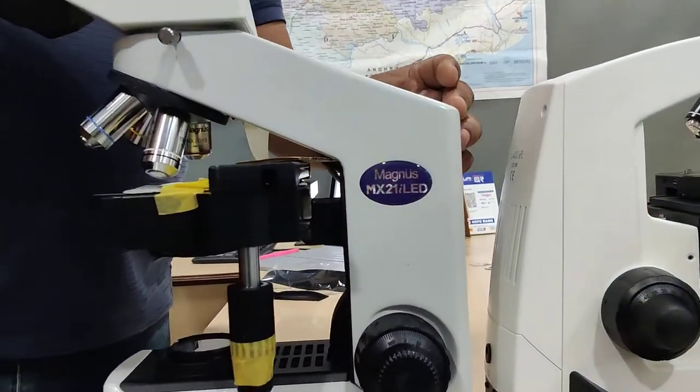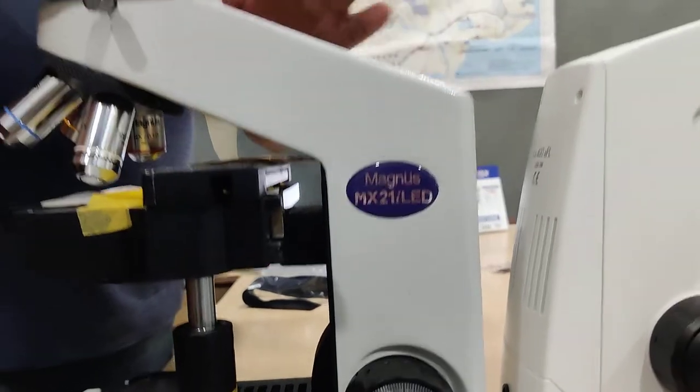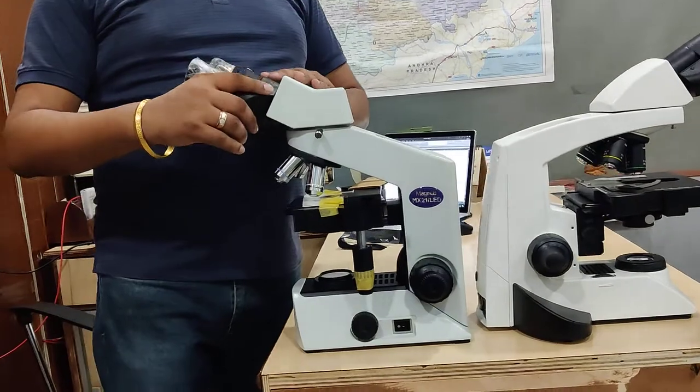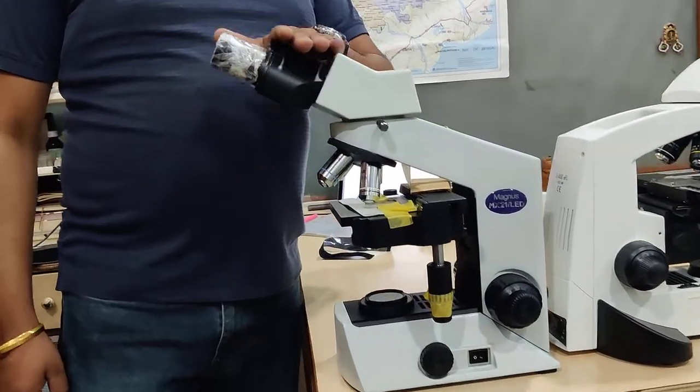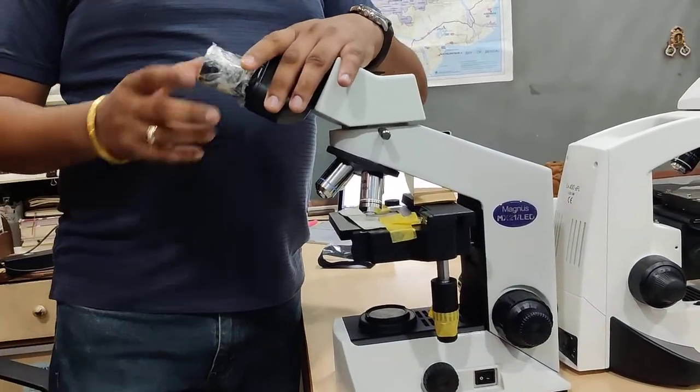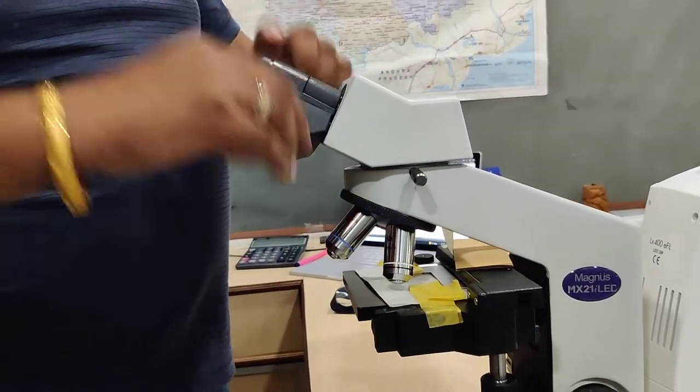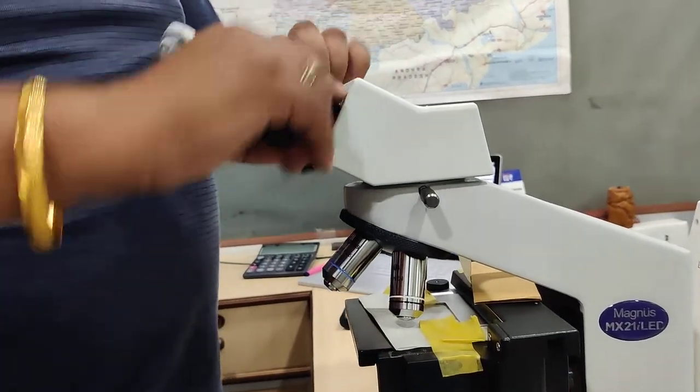Now we are demonstrating the features of the MX-21i. The first feature is that it has a 30 degree inclination. With this 30 degree inclination, it has silent movement. It doesn't have a sliding head, it has silent movement.